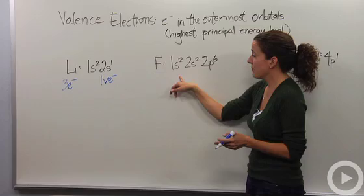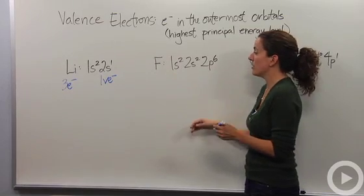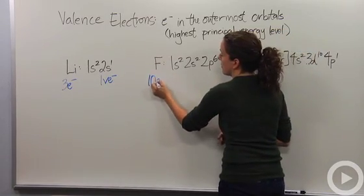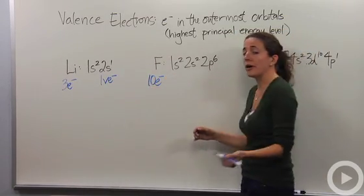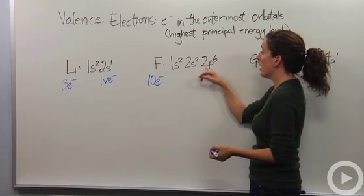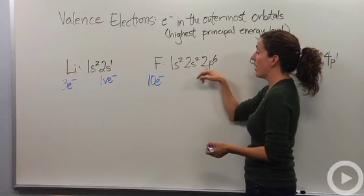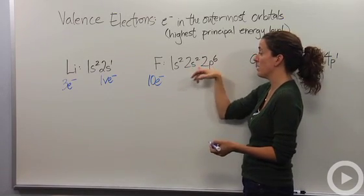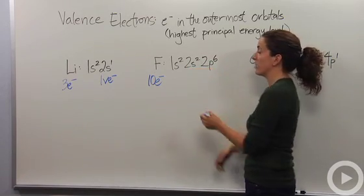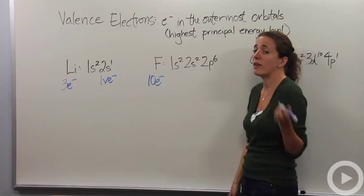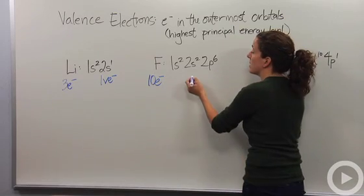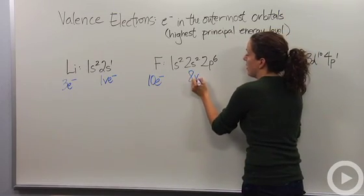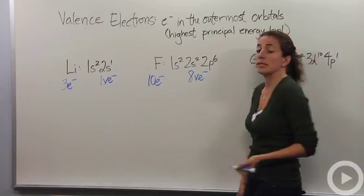Going on to fluorine — fluorine has a total of nine electrons. However, only seven of them, the ones in the outermost shell — the S and the P of the second principal energy level — are going to be our valence electrons. Those are the ones that really make a difference, so in this case we have seven valence electrons.